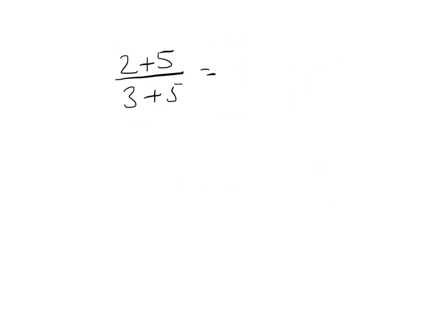And speaking of cancelling, 2 plus 5 over 3 plus 5, well, that's equal to 2 plus 5 is 7, and 3 plus 5 is 8. So, that's 7 eighths. Now, probably the most common mistake that people make when they're working with algebraic fractions, or even any other kind of fractions, is to try to cancel off the plus 5 from the top and the bottom,